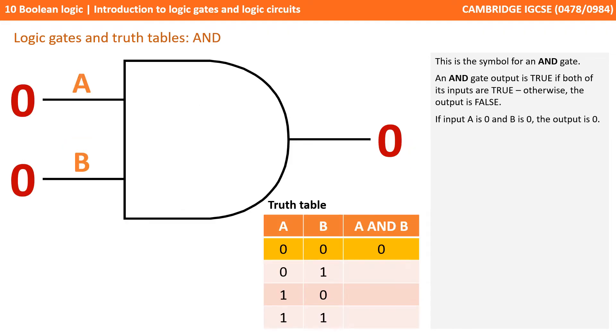This is the symbol for an AND gate. An AND gate's output is true if both of its inputs are true. Otherwise the output is false. So if input A is 0 and B is 0, the output is 0.